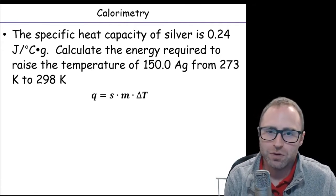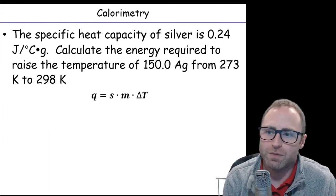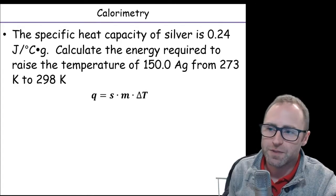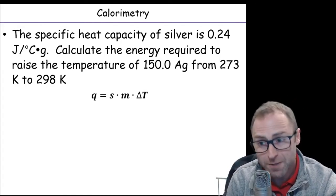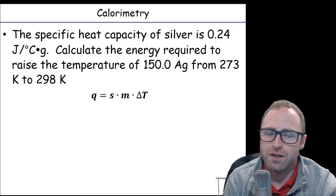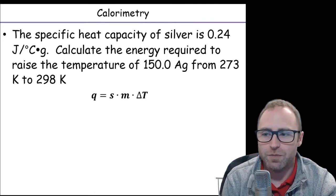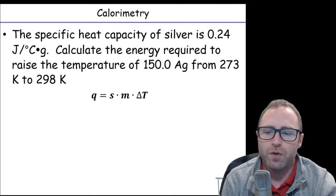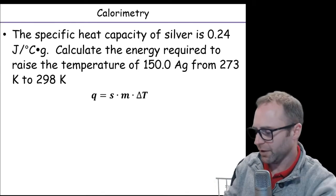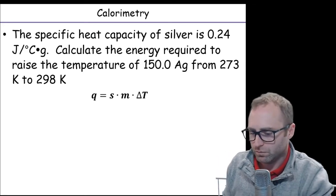What is a typical kind of question that you might see for a specific heat capacity with respect to chemistry 150? And so this would be one of those kinds of problems here. So our specific, it's telling us the specific heat capacity of silver is 0.24 joules per degree Celsius times gram. Calculate the energy required to raise the temperature of 150 grams, that should be 150 grams of silver from 273 Kelvin to 298 Kelvin. So we're going to go to the whiteboard here to answer this problem. All right.